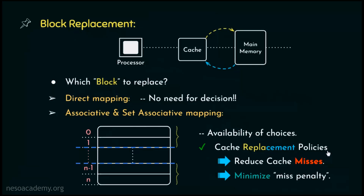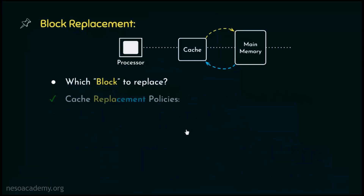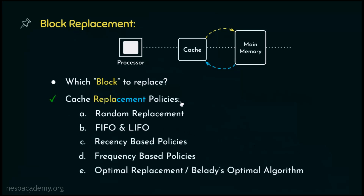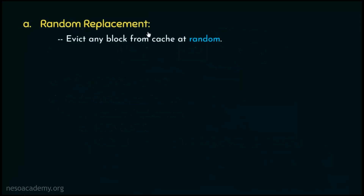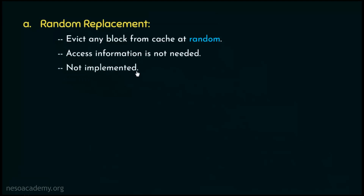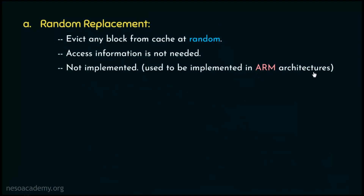Now let's talk about the various cache replacement policies. Regarding recency-based and frequency-based policies, we will discuss those in the next session. Today we are going to discuss random replacement, first-in-first-out, last-in-first-out, and the optimal replacement policy. In random replacement, we choose the block to be evicted from the cache at random. Therefore, access information is not required, which is actually needed by most other cache replacement policies. It's not really implemented anymore — it used to be implemented in advanced RISC machine architectures.